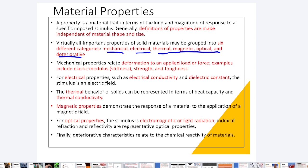Thermal properties describe the thermal behavior of solid material in terms of heat capacity and thermal conductivity. Just as we have electrical conductivity, we also have thermal conductivity — how much heat is transferred through the material. This is very important in applications like heat exchangers and air conditioning.